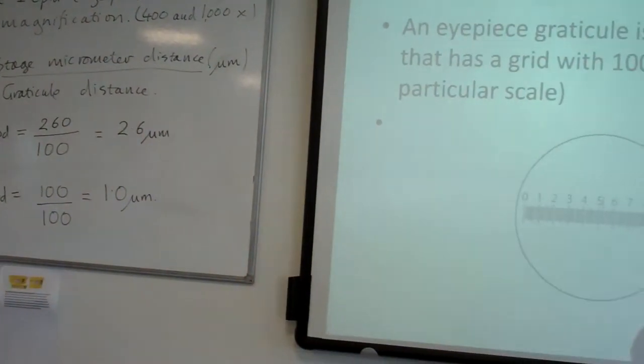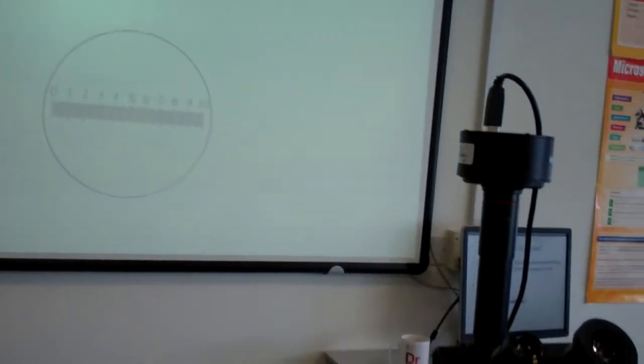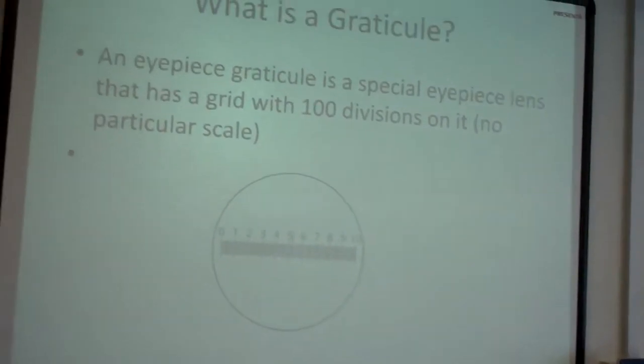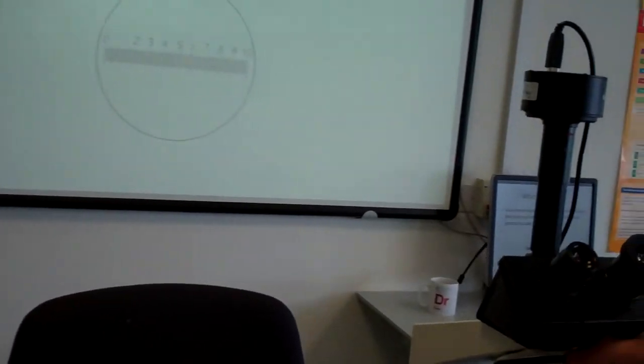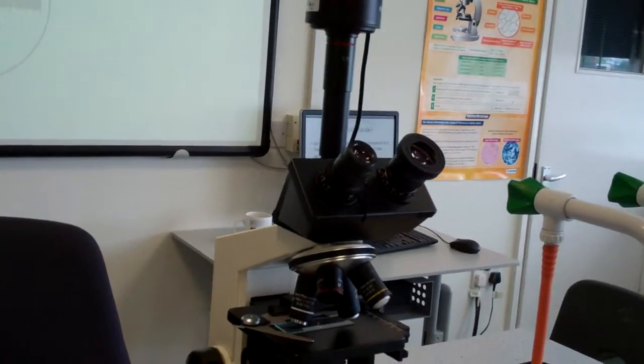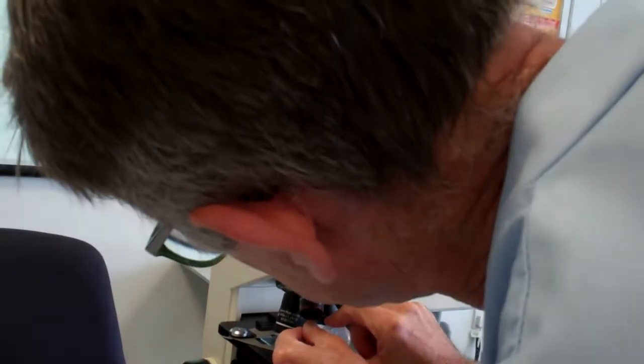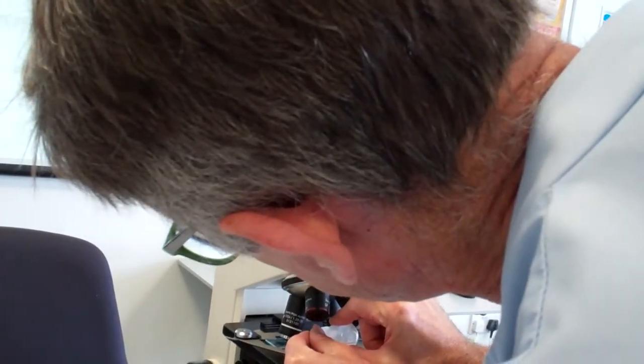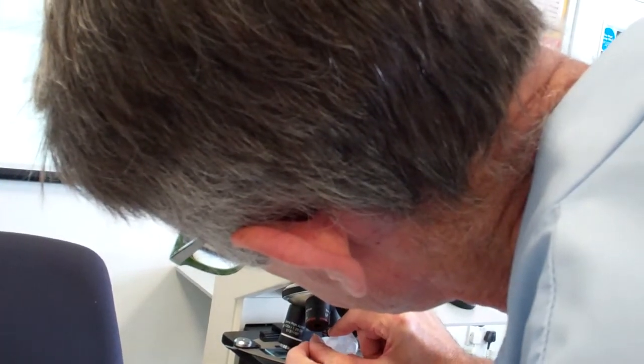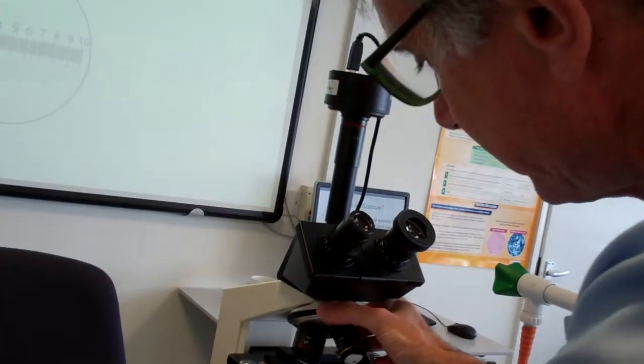Now we also need to calibrate the 1000 times magnification. Again, move your slide in so it leans to one side, add two dots of oil, and then slowly focus at 1000 times.